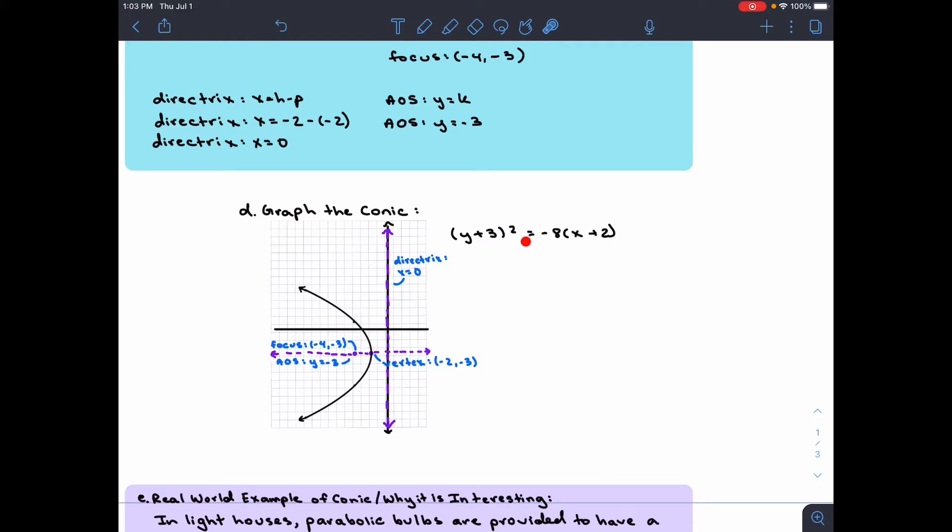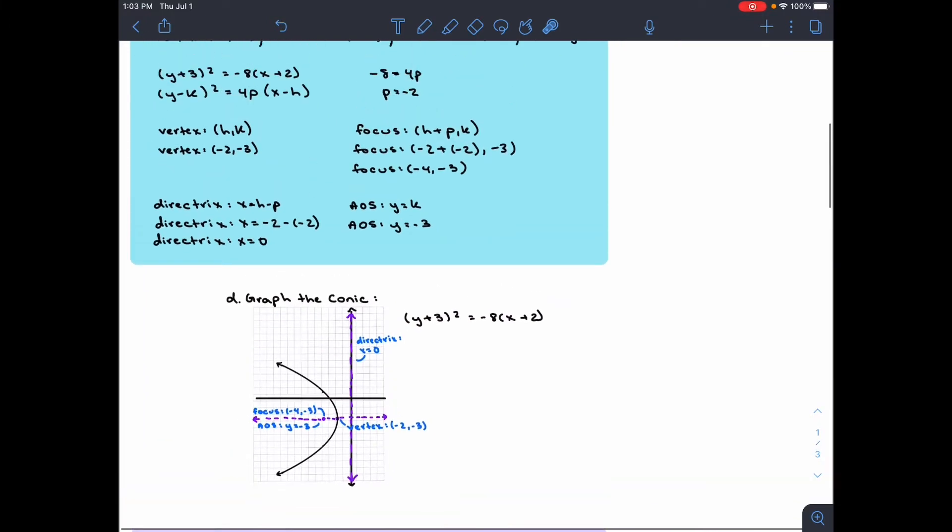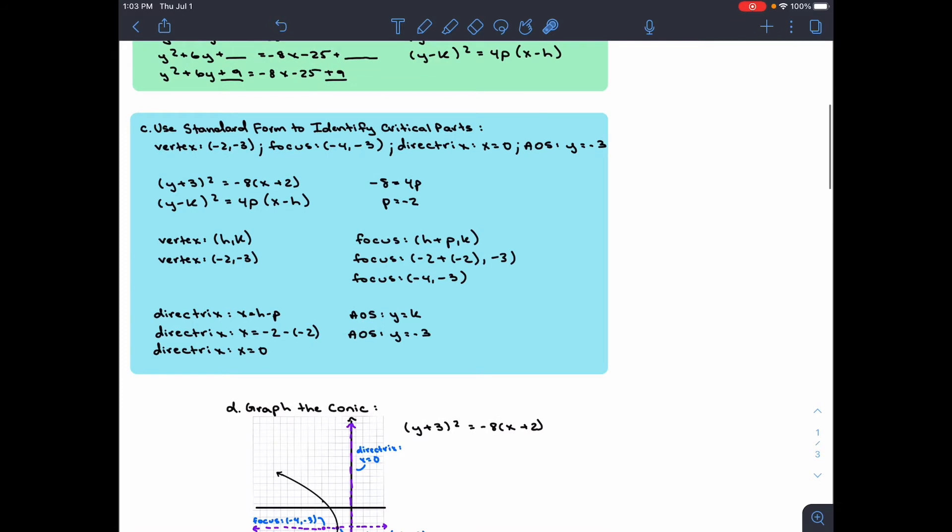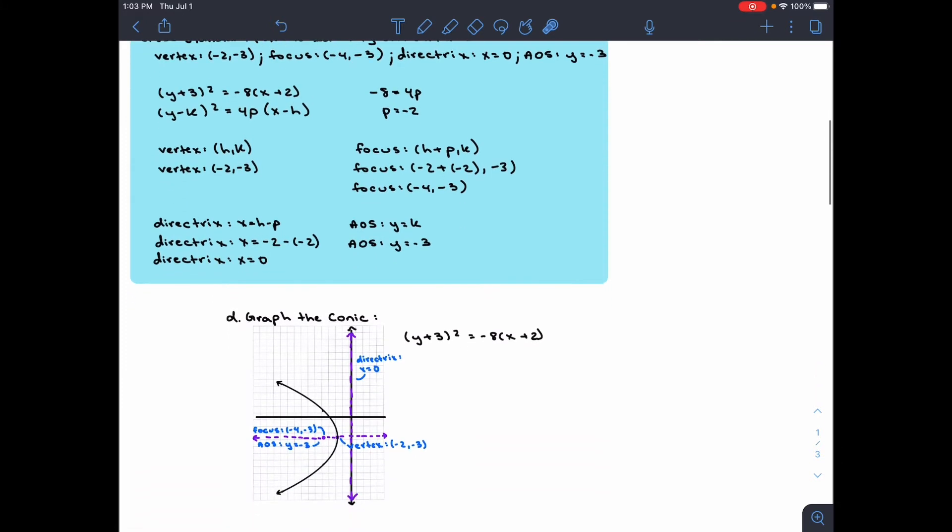We need to convert it to standard form, and this is the equation right here. From this equation, we know that this is a horizontal conic. It follows this formula: (y - k)² = 4p(x - h).